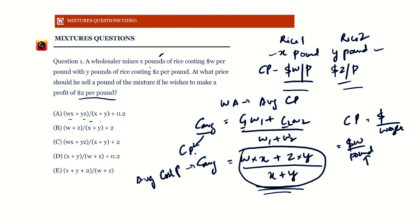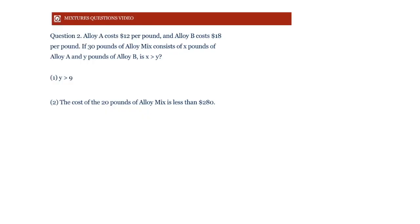Option C gives us (wx + zy)/(x + y) + 2, which is our average cost price plus the profit of dollar 2. Since CP plus profit equals selling price, option C gives us the correct selling price. The answer is C. That question was straightforward — now let's look at this data sufficiency question.